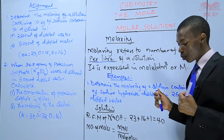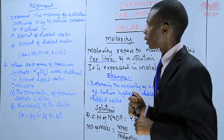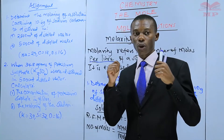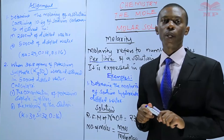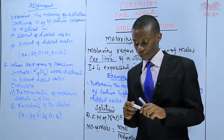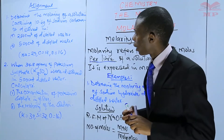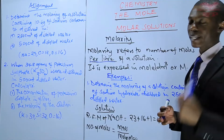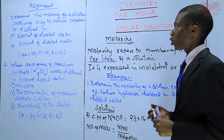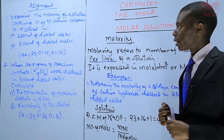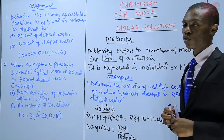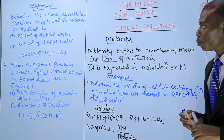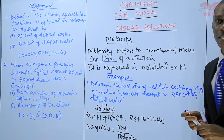We did examples and I left two questions which you were to do. In this lesson I want us to go through the two questions and see whether you've done them correctly. Question number one was: determine the molarity of a solution containing 10.6 grams of sodium carbonate dissolved in A) 250 cm³ of distilled water, B) 500 cm³ of distilled water.